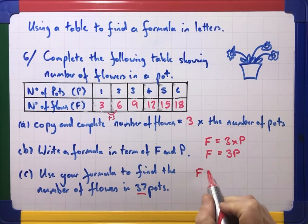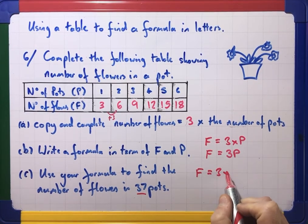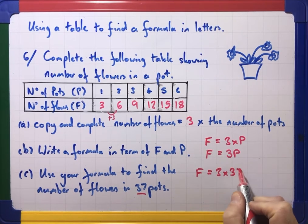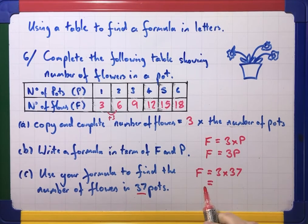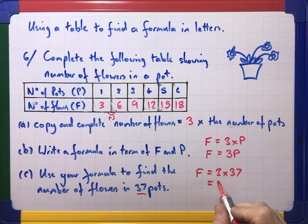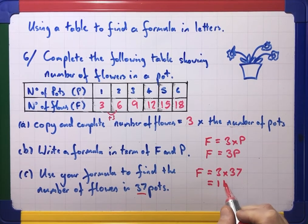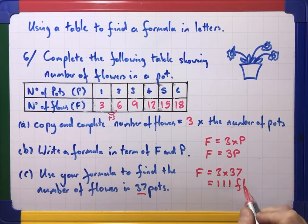So it's just F equals three times and the number of pots is 37. So what's that? Ninety and twenty-one, hundred and eleven. So that would give me one hundred and eleven flowers.